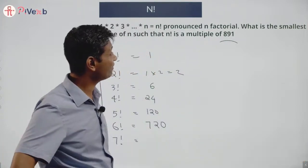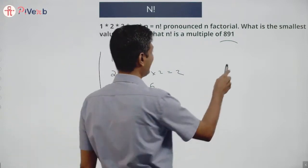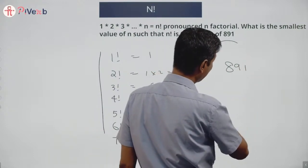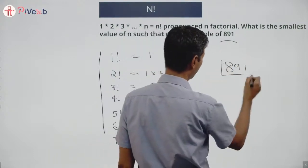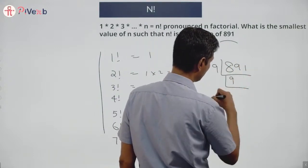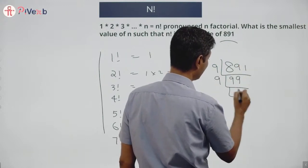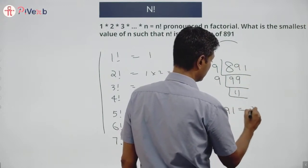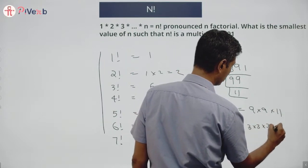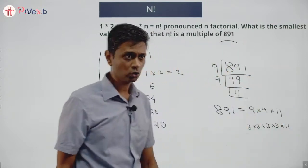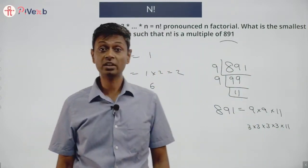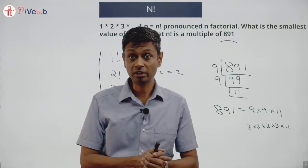Let me factorize 891. 891 is odd, so it's not a multiple of 2. 8 plus 9 plus 1 is 18, so the number is a multiple of 9. Dividing by 9, we get 891 = 9 × 99 = 3 × 3 × 3 × 3 × 11. So 891 = 3⁴ × 11. In my factorial I should somehow get four 3s and one 11.